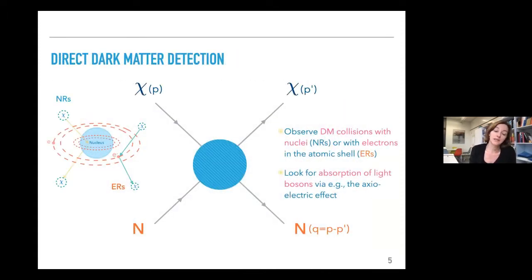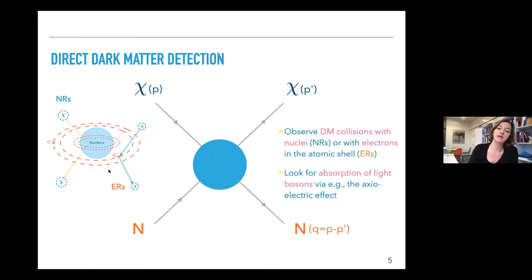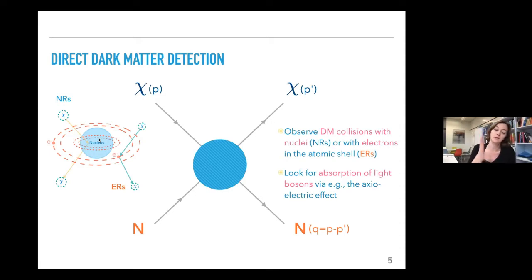Traditionally we look for dark matter collisions with nuclei, and recently more and more for collisions with electrons in the atomic shell, made possible by ultra-low energy thresholds and very low backgrounds — though backgrounds are much higher for electron collisions. We can also look for the absorption of light bosons such as axion-like particles and dark photons via, for instance, the axioelectric effect, where we expect peaks at the mass of the dark matter particle.